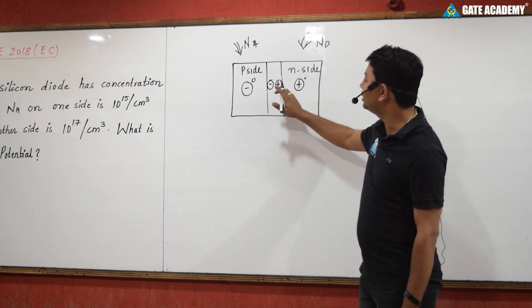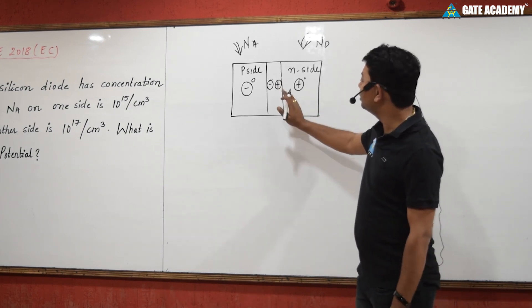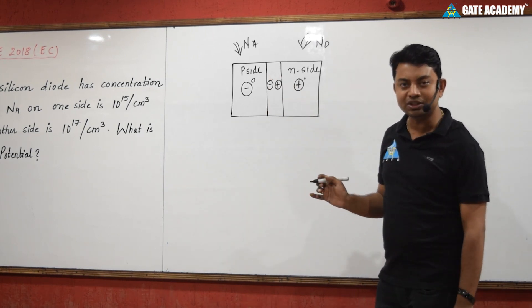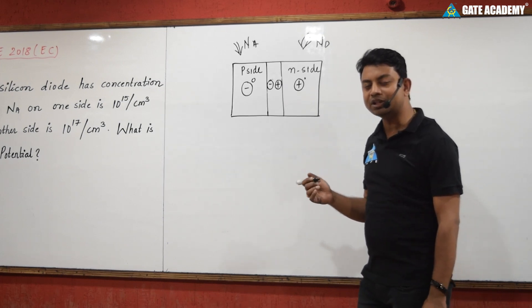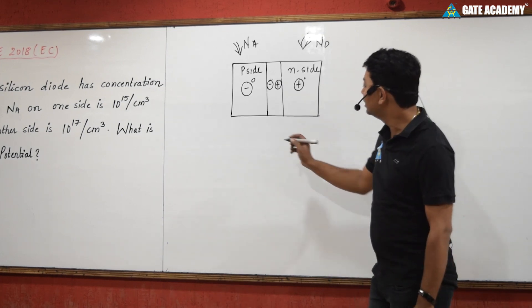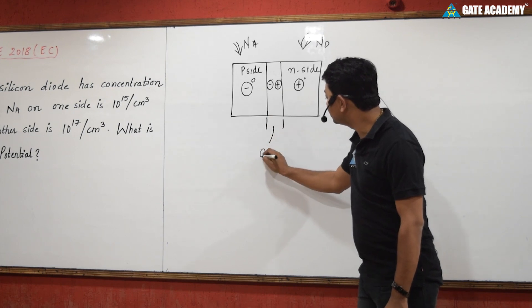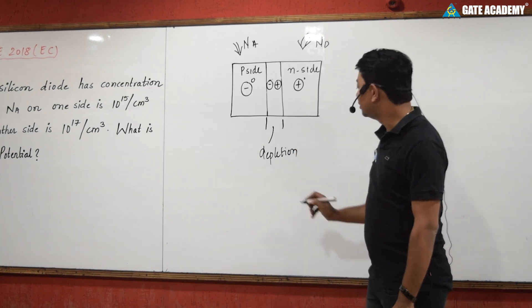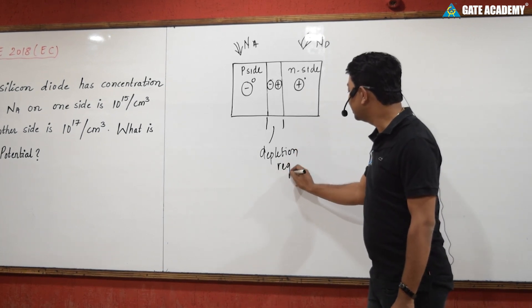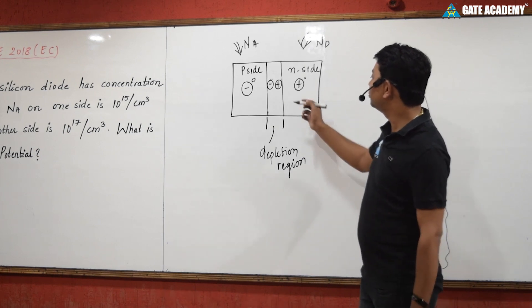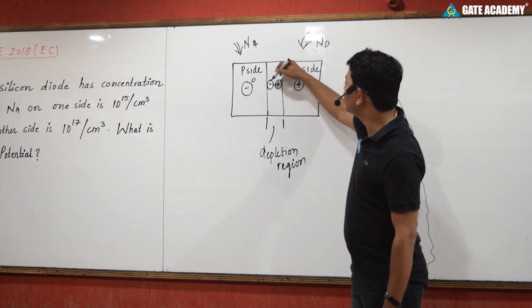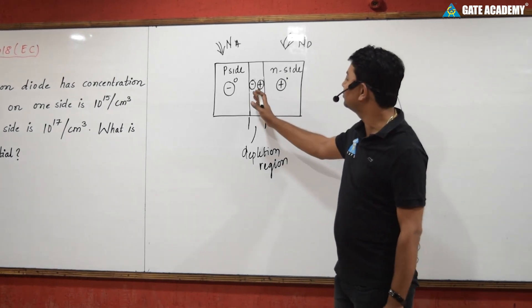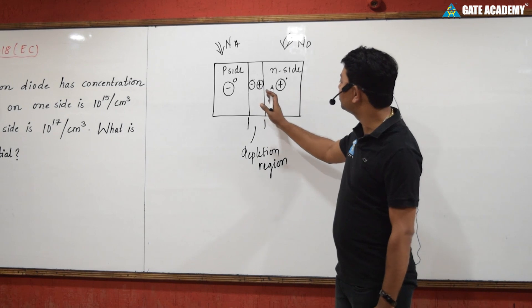What remains in the center are only ions, which are immobile charge carriers. This region is depleted of free charge carriers — it is the depletion region. In this depletion region, a voltage is developed due to the accumulation of negative ions on the P-side and positive ions on the N-side.